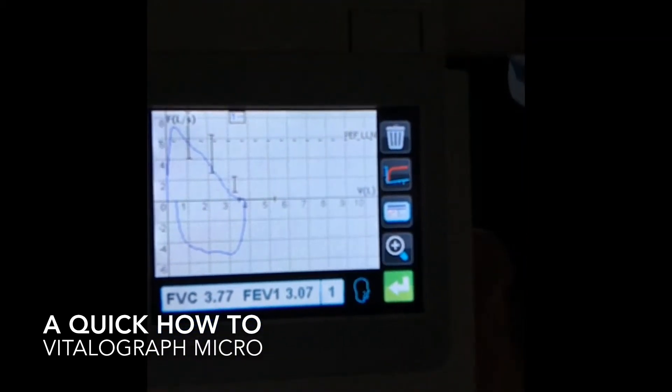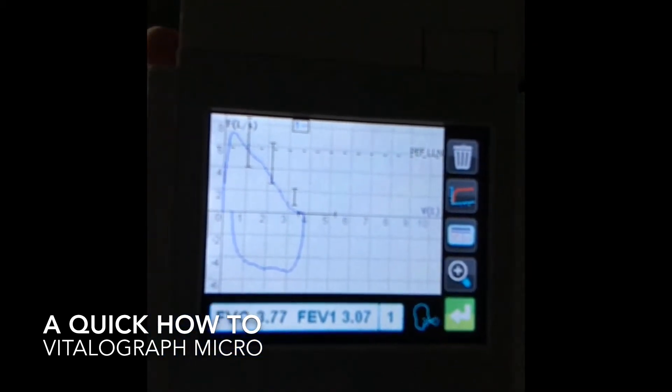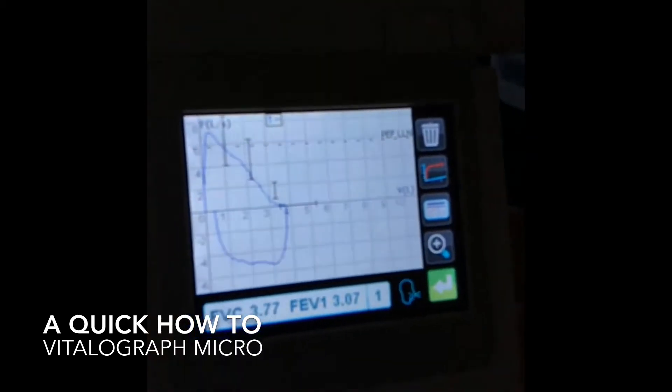All right, so you see that I have a number one there. Again, I apologize that my screen is backwards, but you can see that I have a number one there. And so that effort was acceptable by minimal ATS requirements. So we can go ahead and blow again.